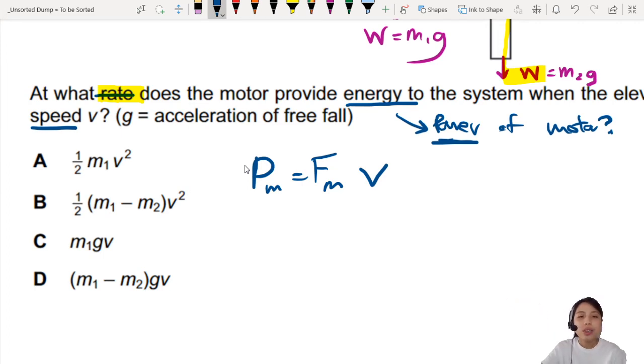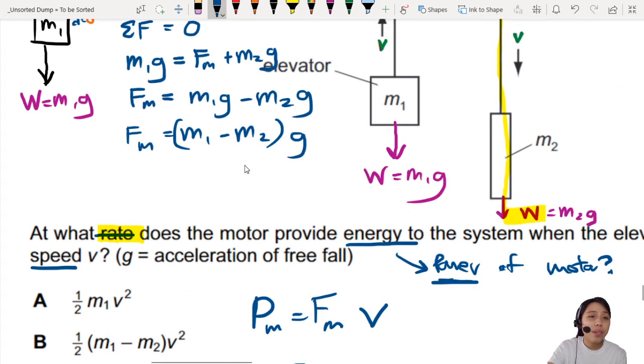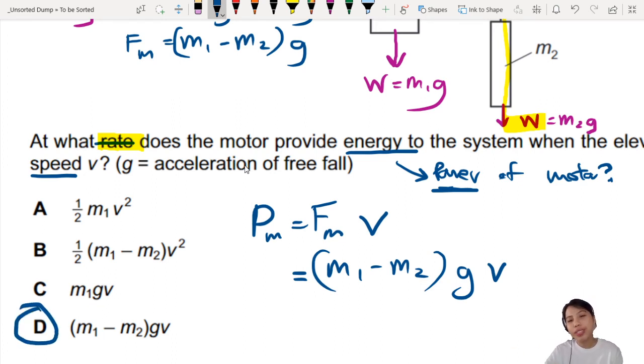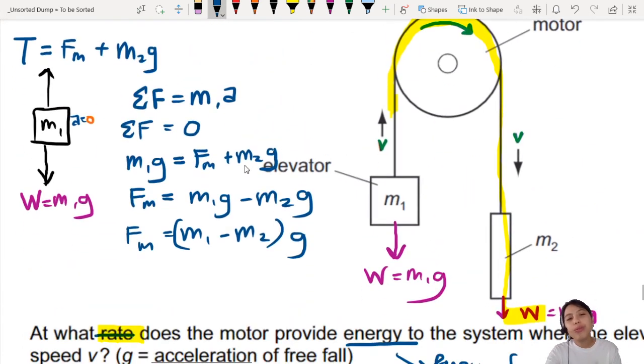So power of the motor will be the force that is exerting times the velocity of the system, the elevator that is moving. So force of motor was M1 minus M2G times the velocity that the elevator and all the other objects are moving. We already found the answer. Very nice. So the answer is this. M1 minus M2GV. Pretty cool, huh?